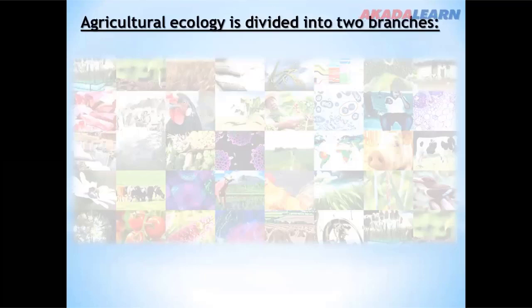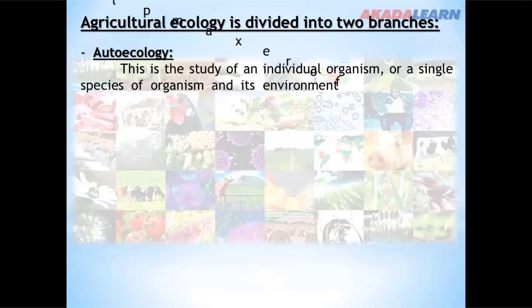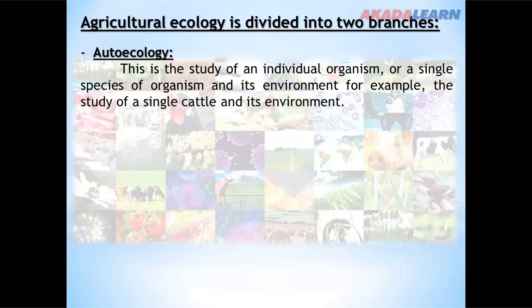Agricultural ecology is divided into two branches. The first is auto ecology, which is the study of an individual organism or a single species of organism and its environment. For example, the study of a single cattle and its environment.